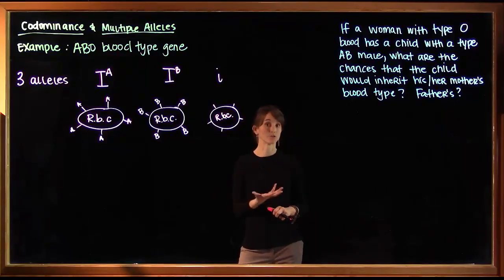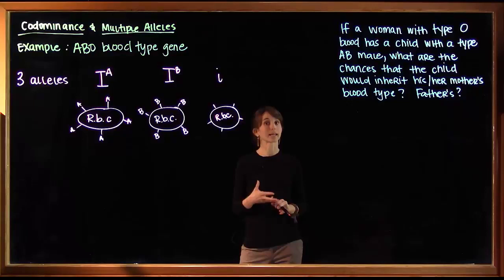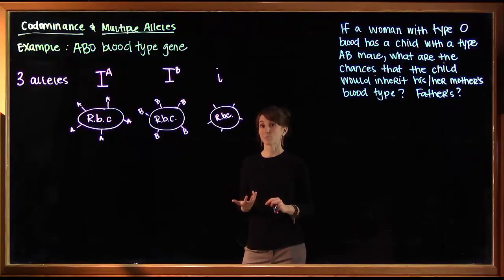So we have three alleles instead of just two, that's what multiple allelism means. The codominance refers to the fact that neither the A nor the B allele can mask the other dominant allele. So if an individual has two dominant alleles, they're going to express both equally.